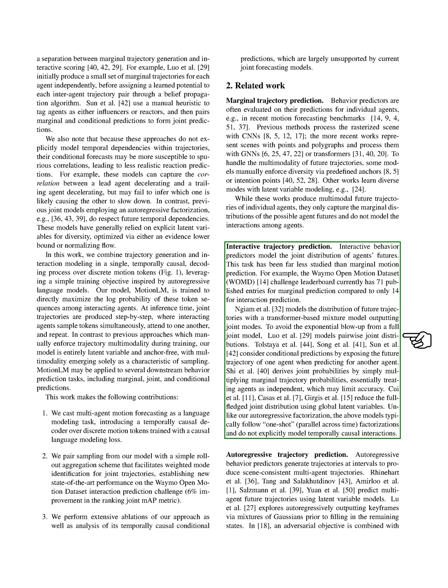Section Autoregressive Trajectory Prediction. We're going to discuss two main topics: autoregressive trajectory prediction and discrete sequence modeling in continuous domains. First, let's talk about autoregressive trajectory prediction. This is a method used to predict the future paths of multiple agents, such as cars or pedestrians, in a scene. It does this by generating trajectories at regular intervals. Some methods use complex models and techniques like latent variables or beam search to make these predictions. However, our method is different. We don't rely on these complex techniques. Instead, we generate multiple possible joint trajectories by directly sampling from a learned distribution of discrete motion token sequences.